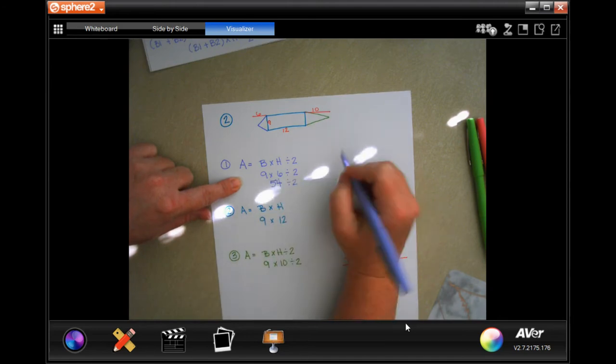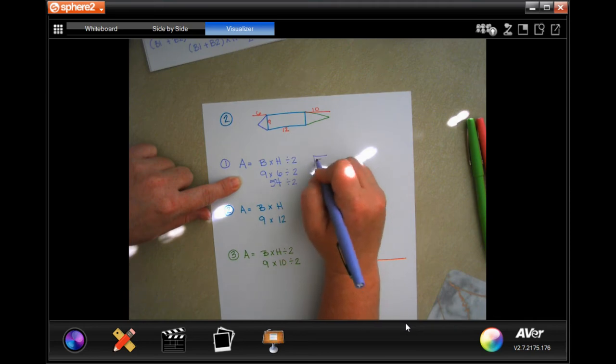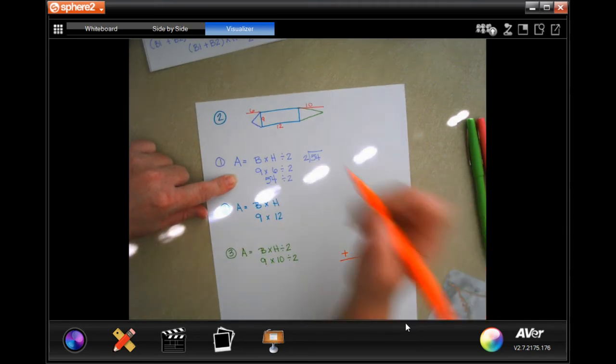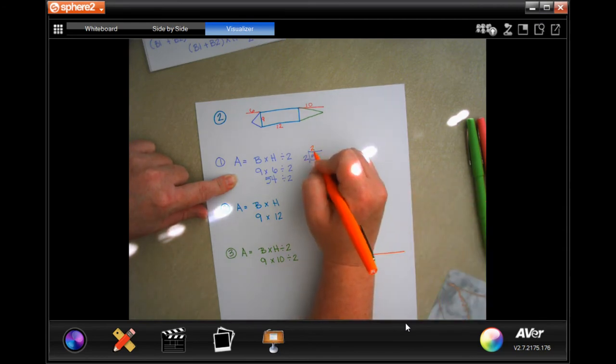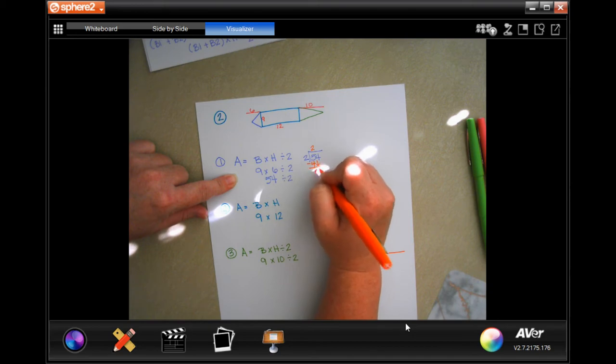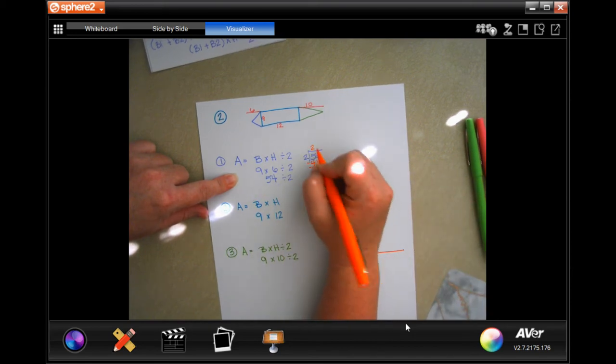54 inside, 2 outside. Two goes into 5 two times, 2 times 2 is 4, subtract and get 1. Bring down your other 4 for 14. Two goes into 14 seven times, 7 times 2 is 14, subtract to zero. So our first number is 27.